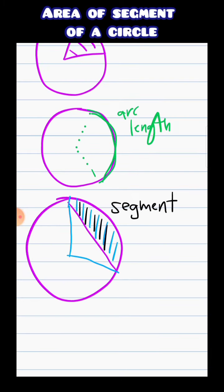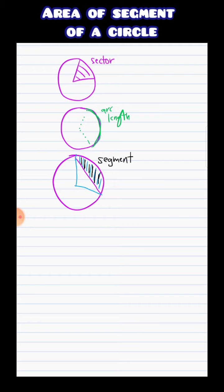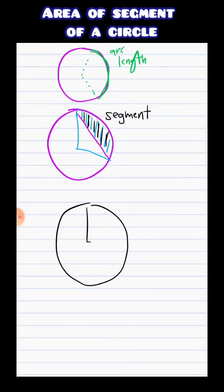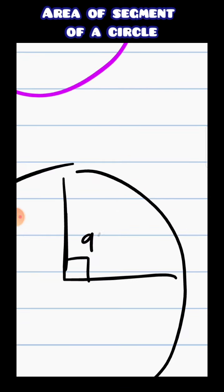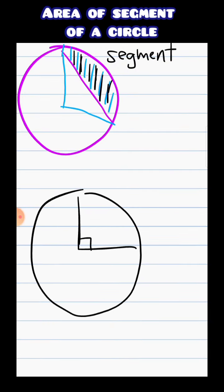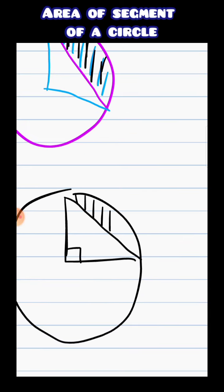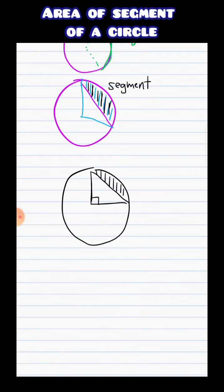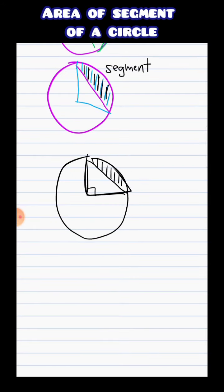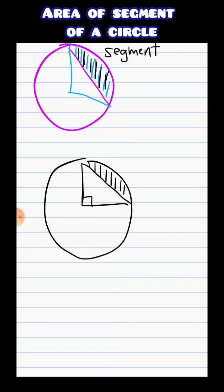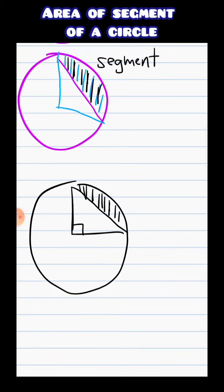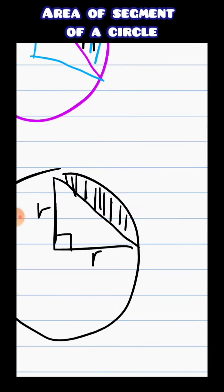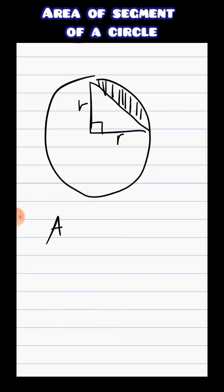So how are we going to find this area right here? Let's just start with the very basic. Suppose we have a circle that has a radius R, like this one, and then we want to find this area. Since we've already discussed how to find the area of a sector, we can find that first — area of the sector — and then subtract the area of this triangle. What will be left is the area of this segment.